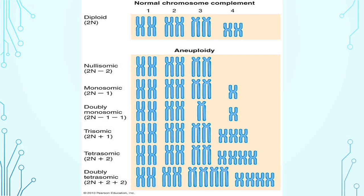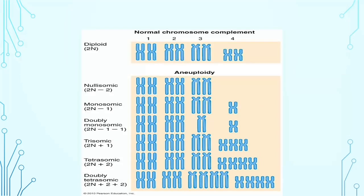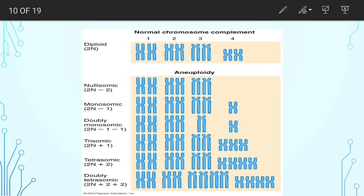Human aneuploidy includes both autosomal as well as sex chromosomal aneuploidy. On the basis of loss or gain, aneuploidies can be of different types. As we know, the normal chromosomal complement for humans is 2n — that is, each set is made up of 2 chromosomes. When nullisomy occurs, there is deletion of a single set, that is, 2 chromosomes are deleted from the set.